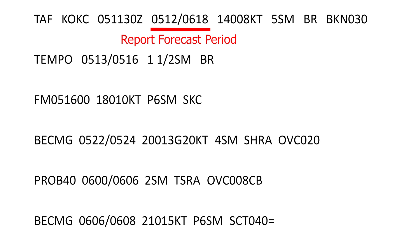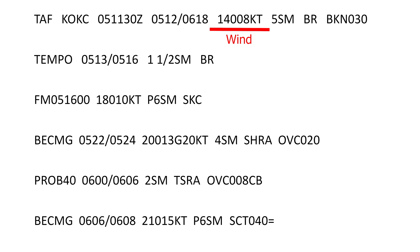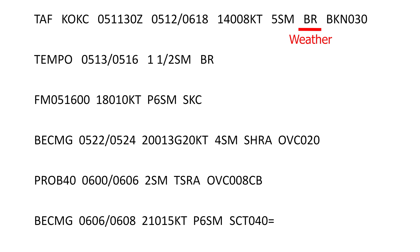Then comes the forecast valid period dates and time in Zulu time for the entire report. The first two digits are the starting date and the next two digits are the starting hour. After the slant symbol there is an ending date and hour. If the forecast period begins at midnight it is annotated by 00; if the end period is at midnight it is annotated by 24. In our case we have a valid period from 12:00 Zulu on the 5th to 18:00 Zulu on the 6th. Next is wind direction at 140 degrees true north with speed of 8 knots. The forecast visibility is 5 statute miles with mist, since BR stands for mist.